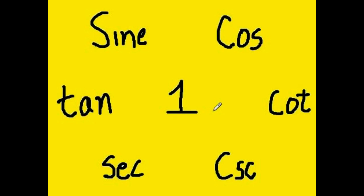Let's do the last one. One to cotangent to cosecant. One squared plus cotangent squared equals cosecant squared.